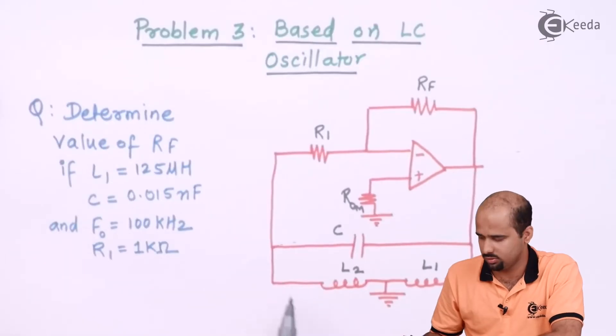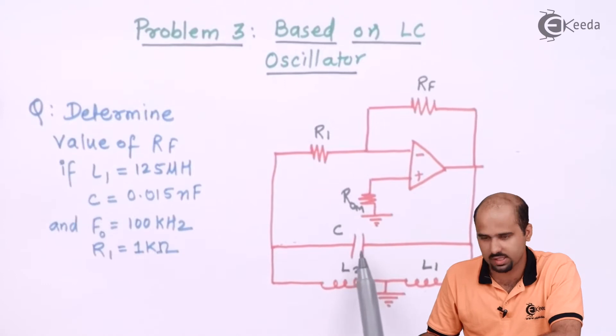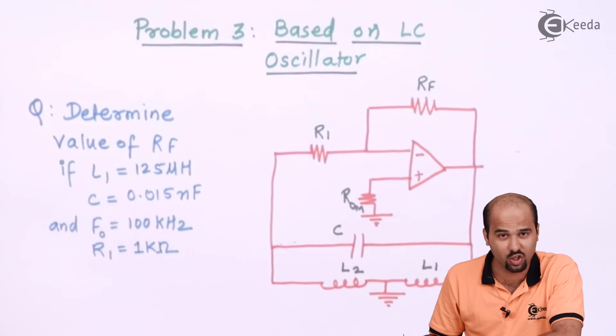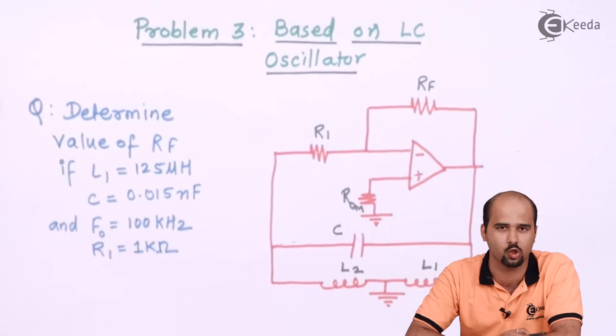In this particular circuit, this is again with op amp, this is capacitor, this is inductor and this is also inductor. They have not mentioned that this is that particular type of LC oscillator,